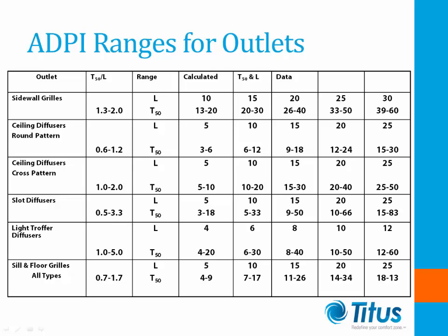For a variable volume application, move across the table for the selected outlet to find the minimum CFM — let's say 200 CFM. If the T50 at 200 CFM is 6 foot or greater, being 0.6 times 10 foot, the selected model will work for the entire range. Finally, compare the NC to make sure it meets the specification. Manufacturers also have available software to make these selections electronically.